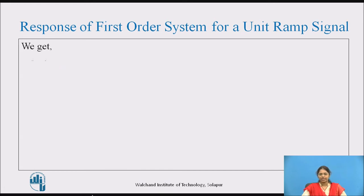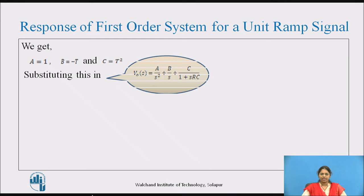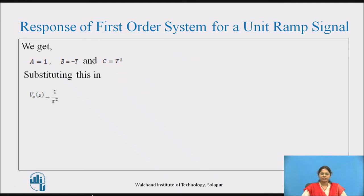Substituting Vi(s) = 1/s² for the ramp signal, we get Vo(s) = 1/(s²·(1 + sRC)). Using the partial fraction method, this equation can be written as A/s² + B/s + C/(1 + sRC). After finding the fractions, we get A = 1, B = −T, and C = T². Taking RC common from the denominator, this becomes 1/s² − T/s + T²/(T·(s + 1/T)).